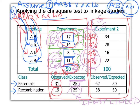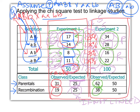In experiment two, the highest two numbers are still parental and the lowest two are recombinant. Observed parentals: 62; observed recombinants: 38. With a total of 100, expected parentals = 50 and expected recombinants = 50, which is 25-25-25-25.